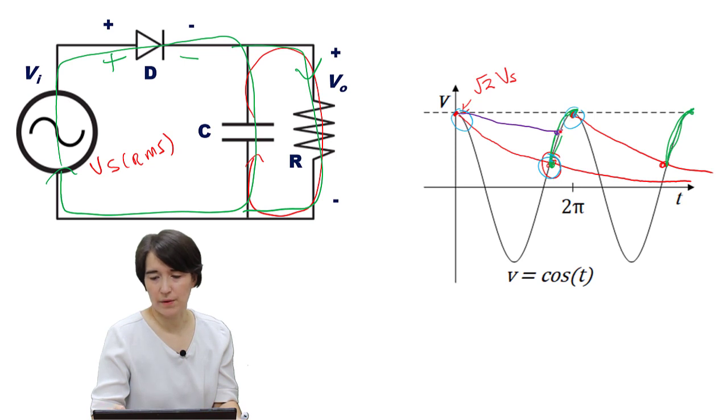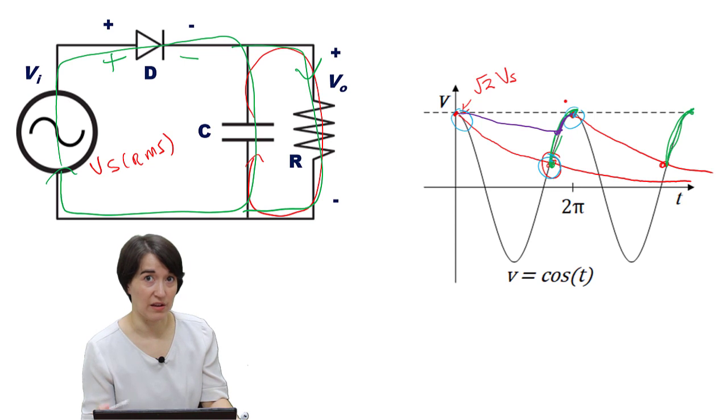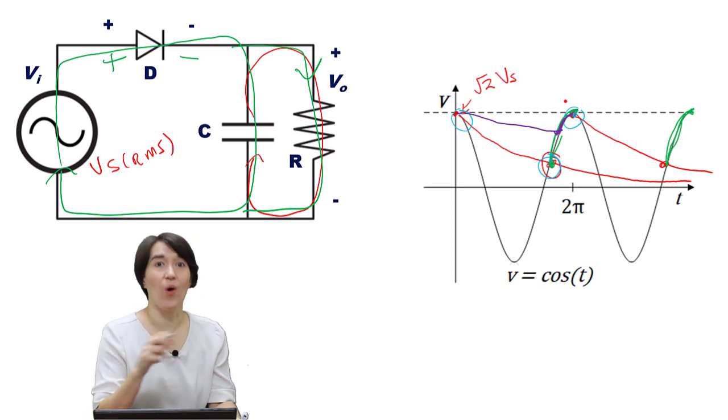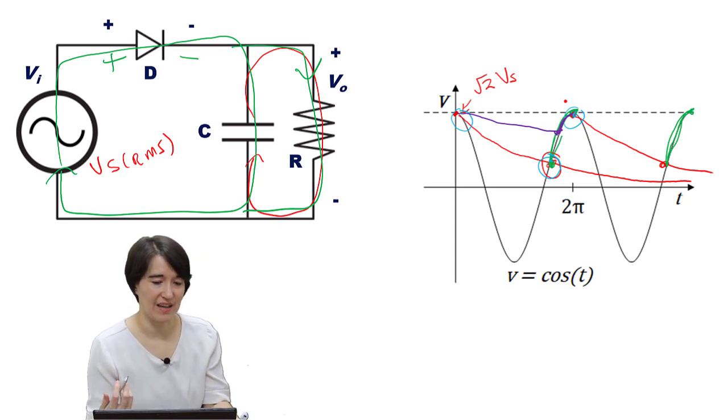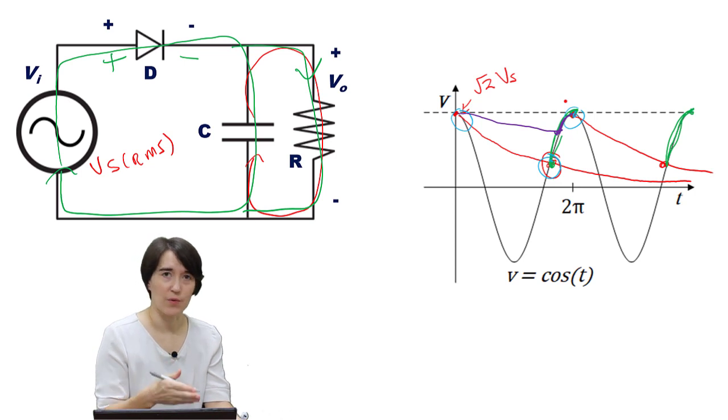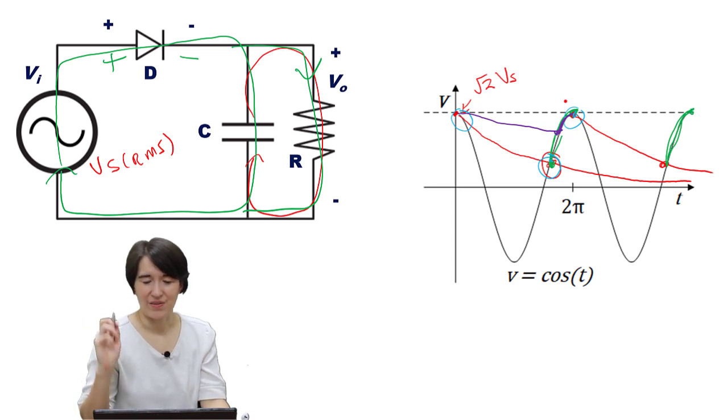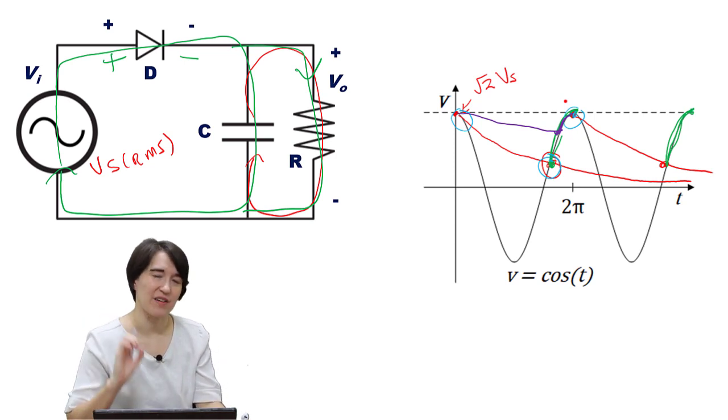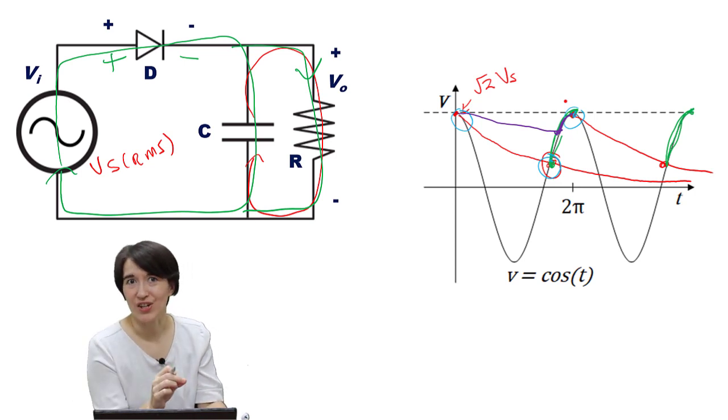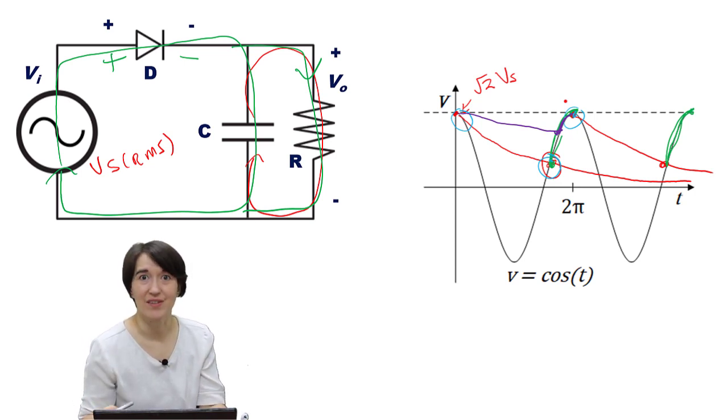So you can actually have huge current spikes from your AC source, which can cause problems on the AC side. So you have to think about the voltage ripple that you actually want in your output voltage—what's acceptable—and the inrush current, the amount of current that your system can take from the source to refill that capacitor each time.